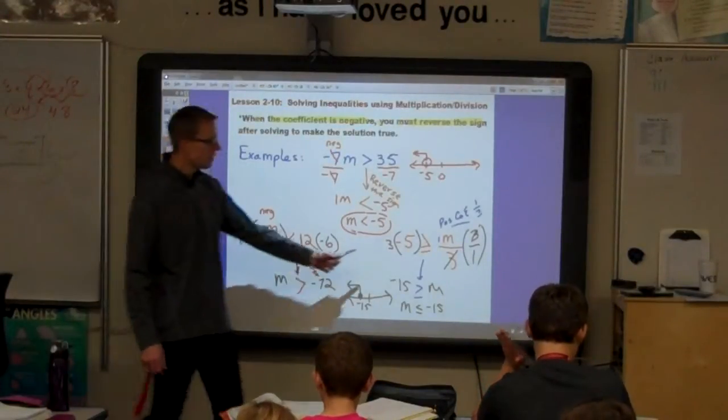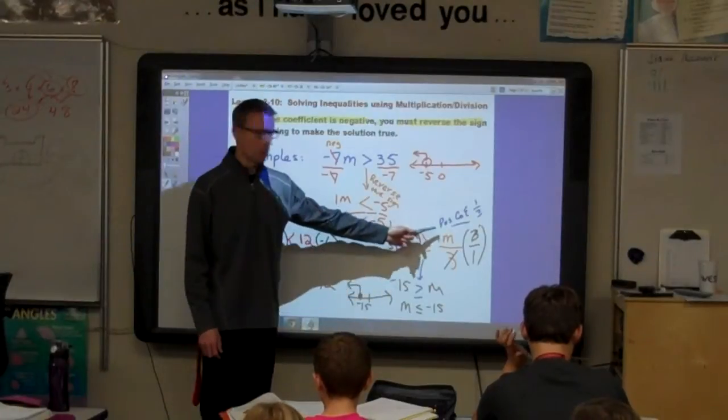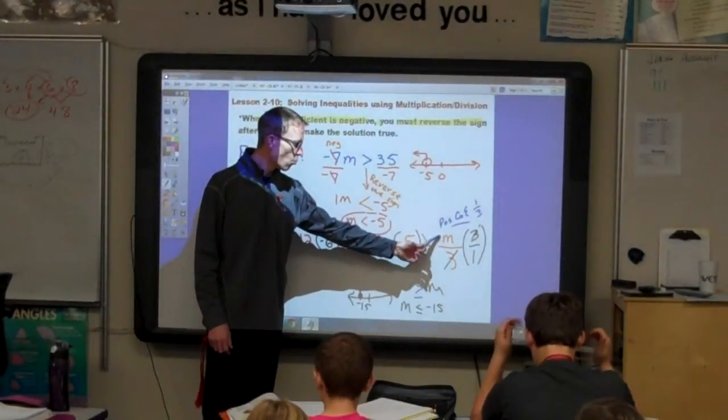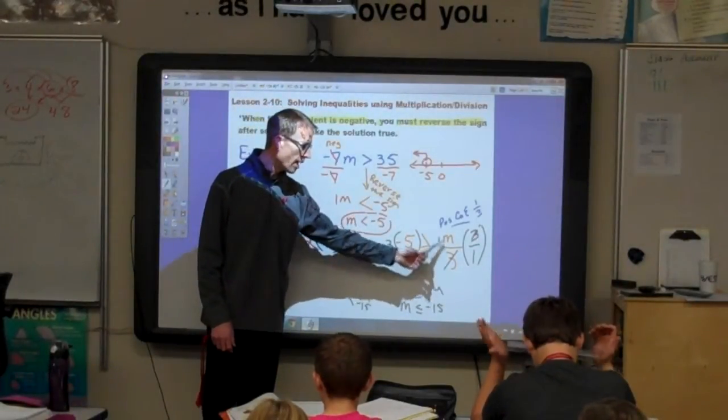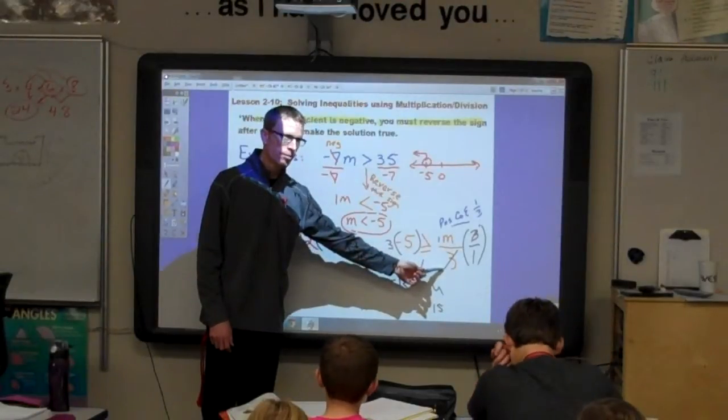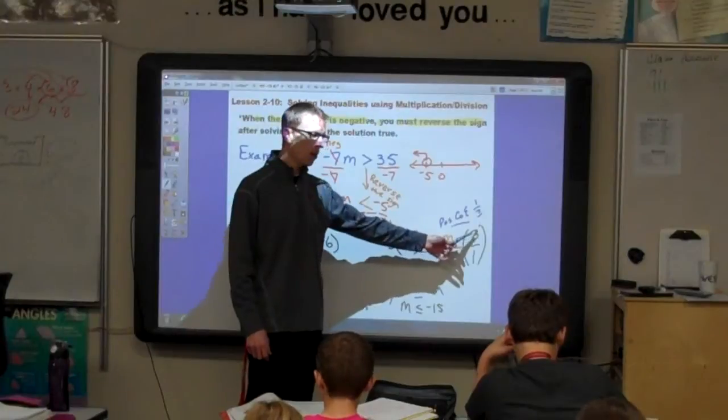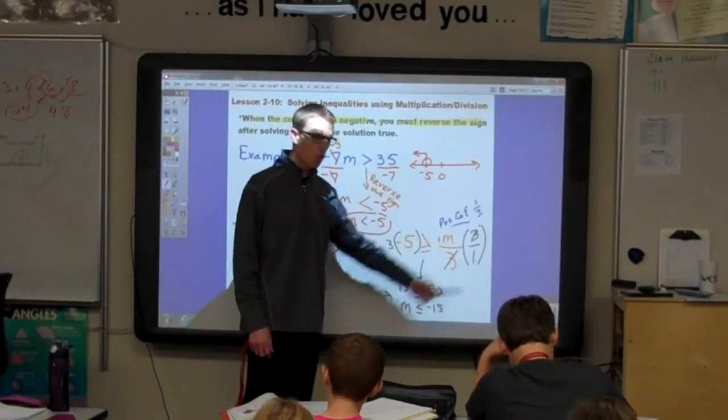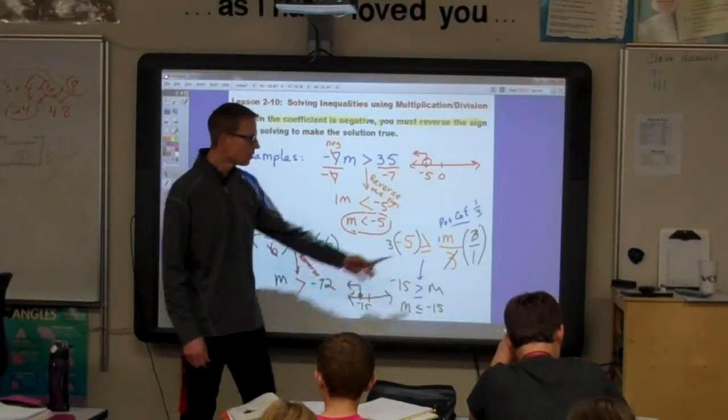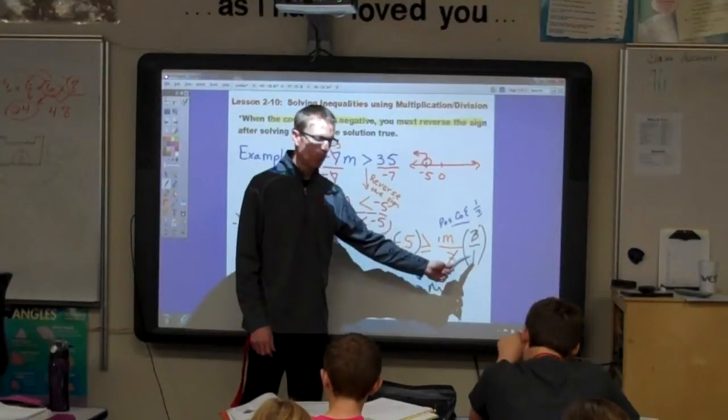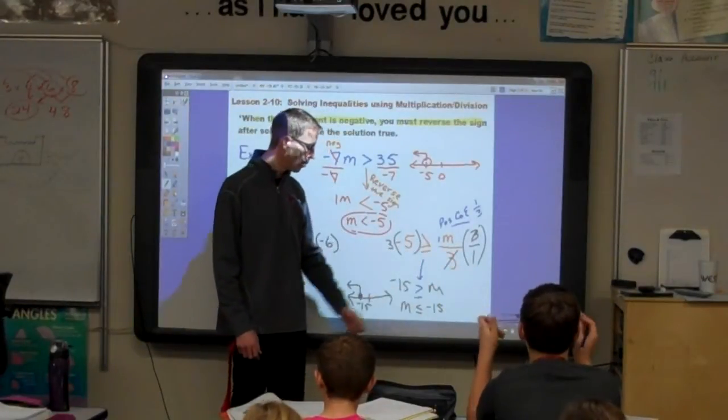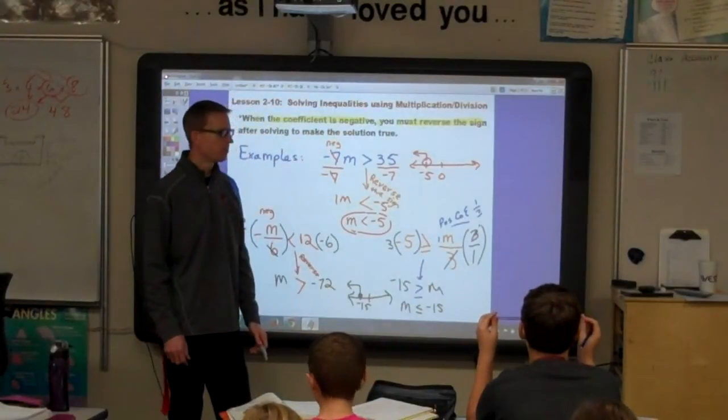So, instead of less than, it's now greater than, and 12 times negative 6 is negative 72. And then, this example, this one has a positive coefficient. It's 1m over 3, positive 1m over 3. And, when you solve this, you have to multiply by the reciprocal of 3 over 1. Since you're multiplying by a positive 3 over 1, you do not have to reverse the sign on this one.